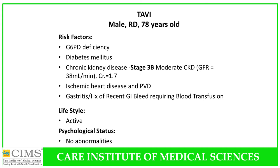Additional risk factors included ischemic heart disease and PVD, history of gastritis and recent GI bleed requiring blood transfusion — though endoscopy did not show any active bleed. He had a very active lifestyle, being a practicing physician, with no other psychological abnormalities.